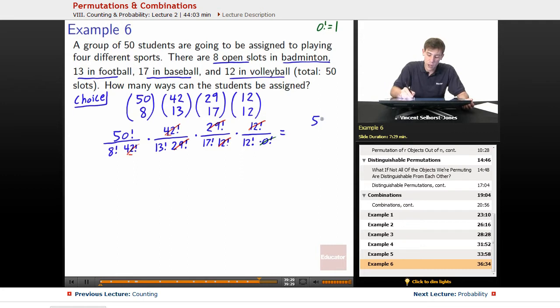So that leaves us in the end, 50 factorial on the top divided by 8 factorial times 13 factorial times 17 factorial times 12 factorial. So that is the total number of ways that we can put this out for all of our team assignments. Now notice, that is an exact perfect answer. That is correct, but it's not a number.